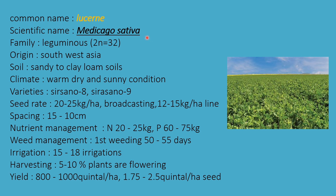The next forage crop is lucerne. Scientific name is Medicago sativa, family Leguminaceae. Chromosome number 2n = 32, origin Southwest Asia. Sandy to clay loamy soils are best suitable. Warm, dry, and sunny conditions are required. Varieties are Sirsoni 8 and Sirsoni 9. Seed rate is 20 to 25 kg per hectare by broadcasting, or 12 to 15 kg by line sowing. Spacing is 15 × 10 cm.